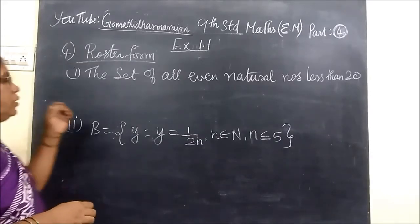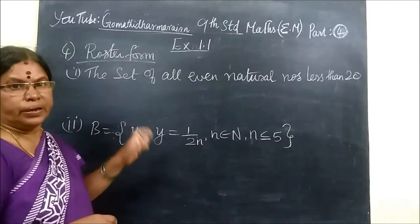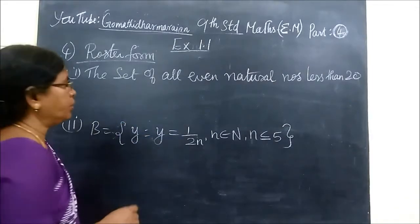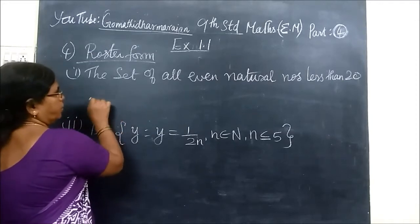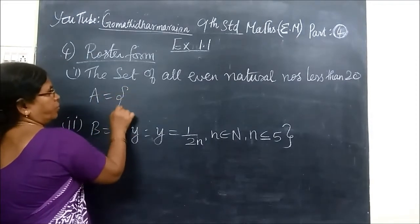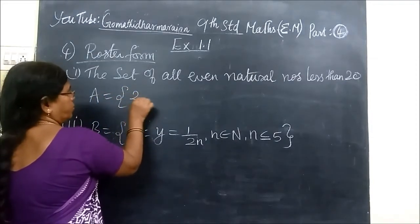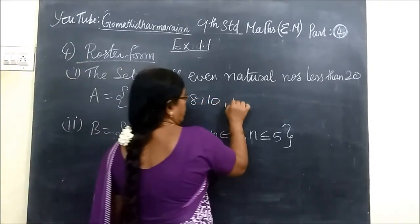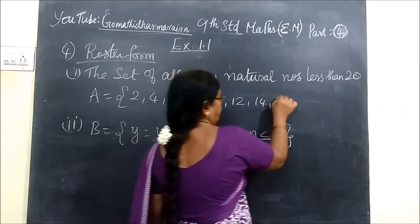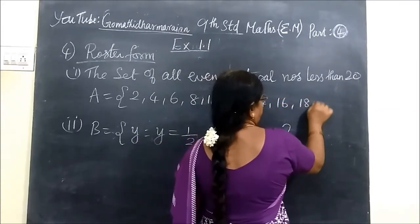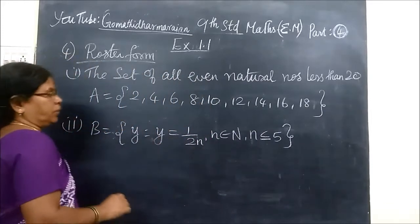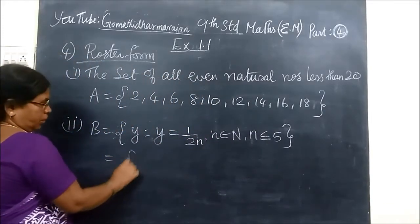Now see the fourth question. We are representing in roster form. Roster form means if we write the elements by putting commas. The set of all even natural numbers less than 20. So that means 2, 4, 6, 8, 10, 12, 14, 16, 18. Less than 20 means no need to write 20.